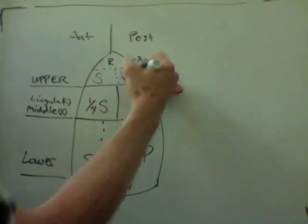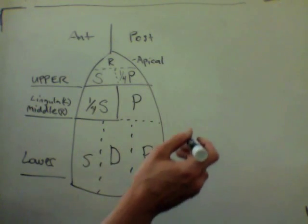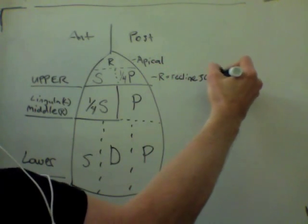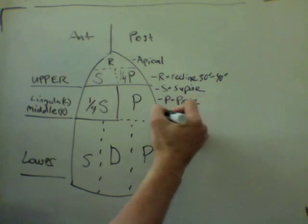The posterior upper lobe is a quarter from prone, and the superior lower lobe is prone, and the posterior basal segment is prone. That's what those little symbols mean.